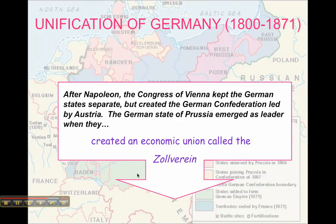The Zollverein was actually pretty successful — you can debate its success — but what's interesting is that we see Prussia taking the lead in terms of who is in charge of, or becomes, Germany.